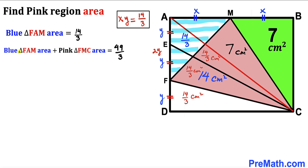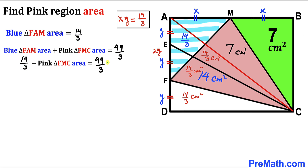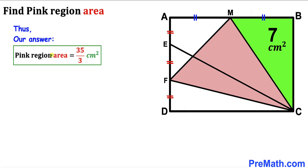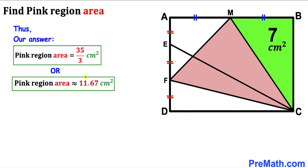In the final step, substituting FAM = 14/3 into our combined area equation: FMC = 49/3 − 14/3 = 35/3 cm². So the pink region area is 35/3 centimeters square, which is approximately equal to 11.67 cm².